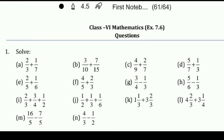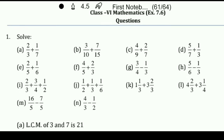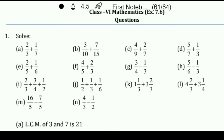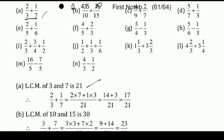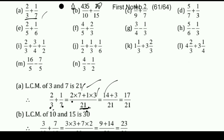Next, exercise 7.6. In this one we will see different denominator questions. Previously we learned the same denominator, where we can directly add the numerators. But with different denominators, we first find the LCM of the denominators, then solve. First question: 2 upon 3 plus 1 upon 7. LCM of 3 and 7 is 21. In the 3 times table, 21 comes 7 times; in the 7 times table, 21 comes 3 times. So 2 × 7 = 14 and 1 × 3 = 3. Therefore 14 plus 3 is 17 upon 21.